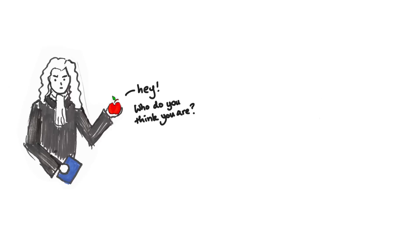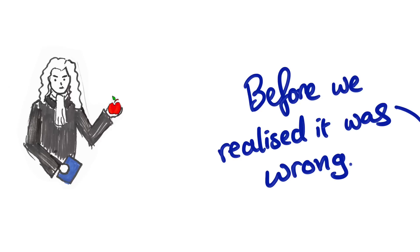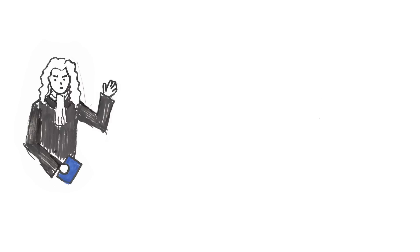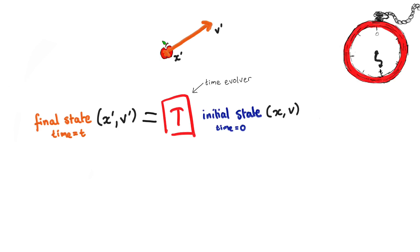Newtonian mechanics did a good job of that. If you know the initial position and velocity of an object, it will tell you exactly where the particle is at any time in the future. In other words, you give it the initial state of the object, and based on the surroundings, it will give you the final state at time t.